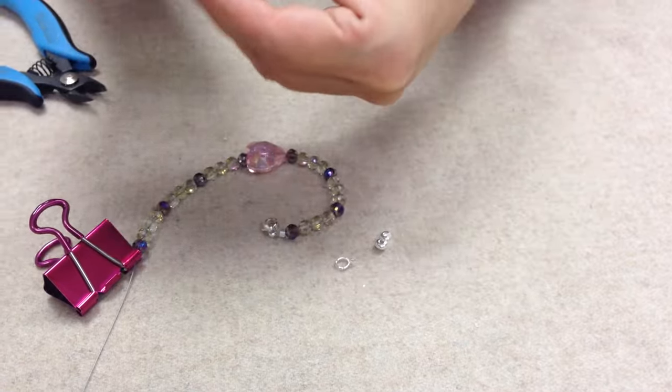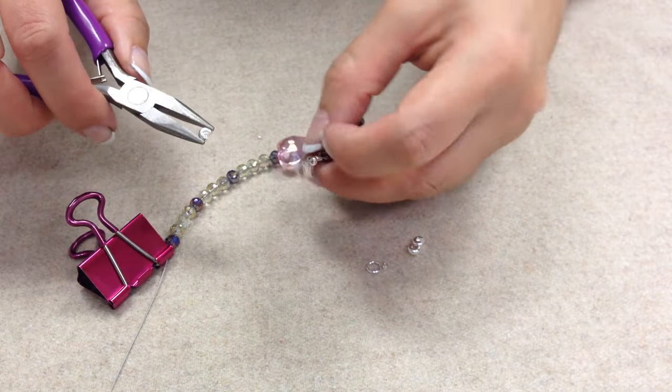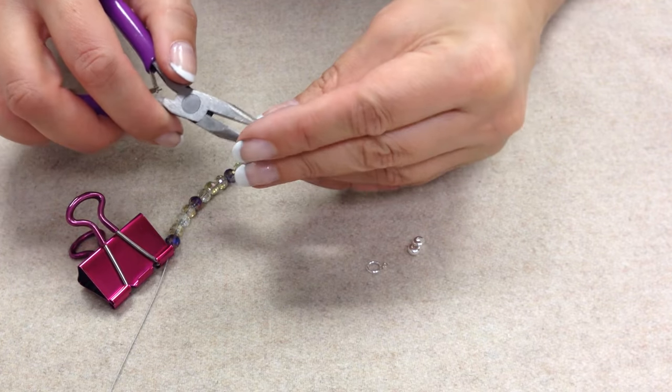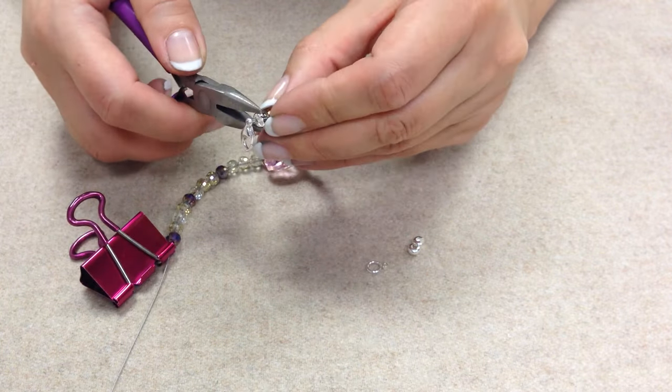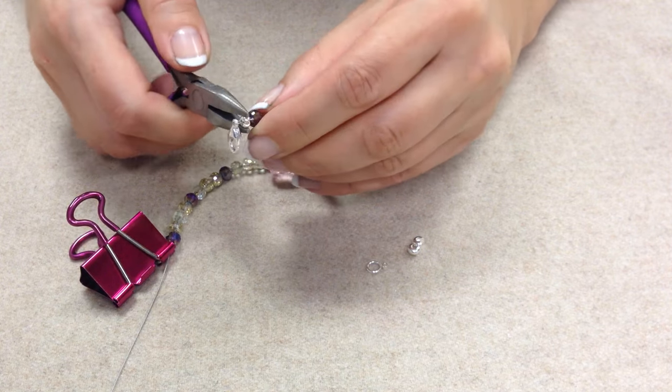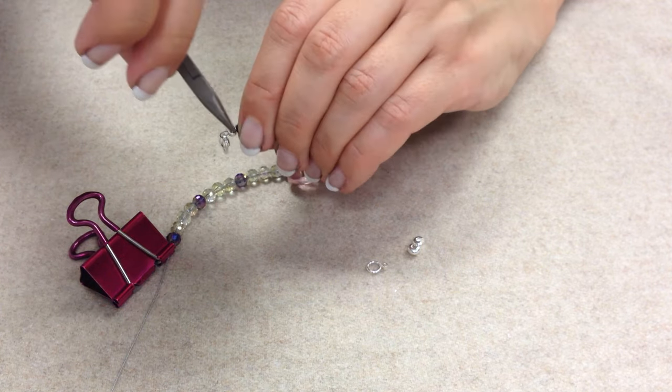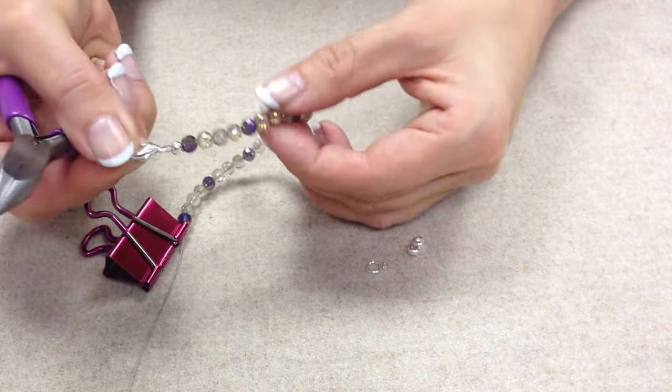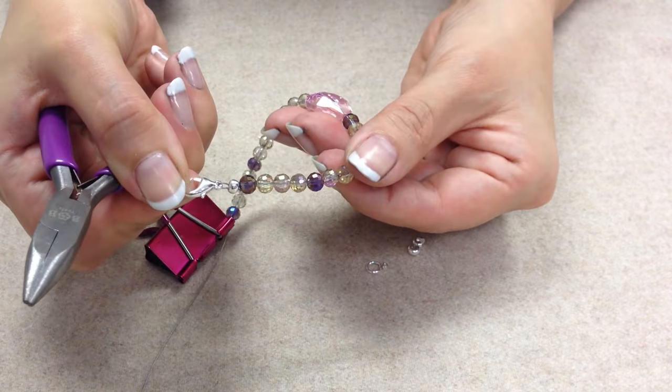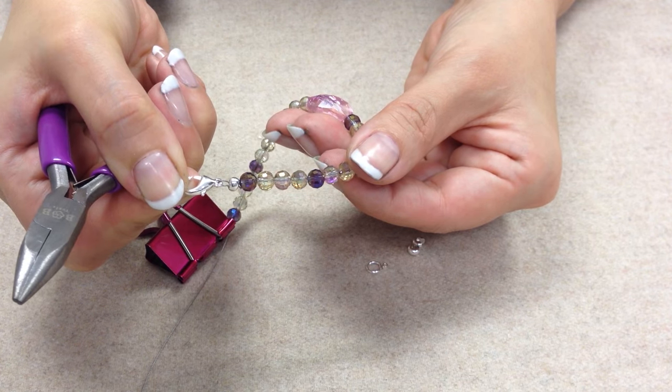Now cover the crimp with a crimp cover. The crimp cover is a C-shaped object. Take your flat nose pliers and pop the crimp cover over the crimp, then very lightly press the crimp cover together. It looks like a nice finishing touch on the end of your necklace or bracelet, like a little bead when closed.